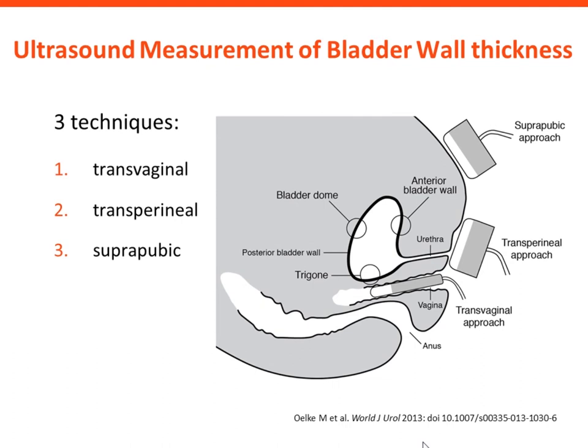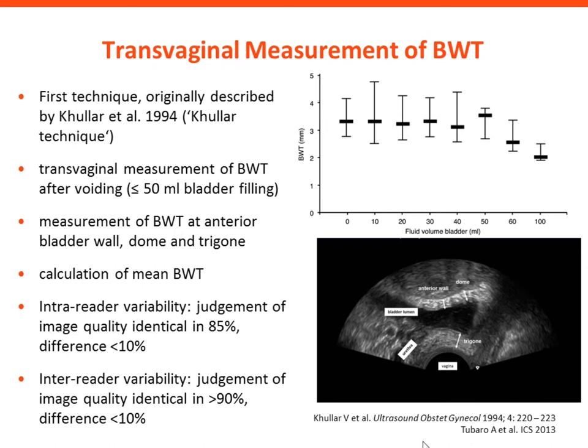Let me go into a little more detail. Here we have the three imaging techniques described in the literature. We have three techniques: the transvaginal one — it's the oldest one, which I will focus on. I will just mention the transperineal technique and the suprapubic technique. It's all dependent on the location of the ultrasound probe when you image the bladder. The transvaginal technique is the most popular because it's the oldest technique.